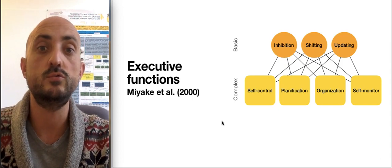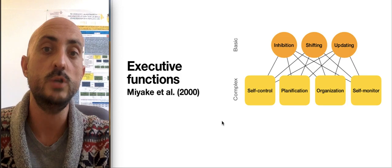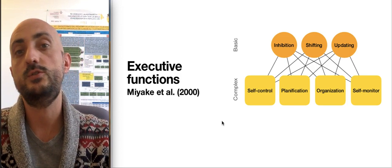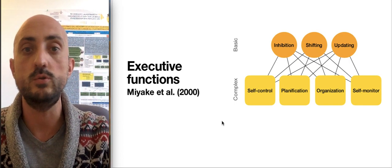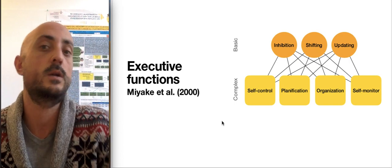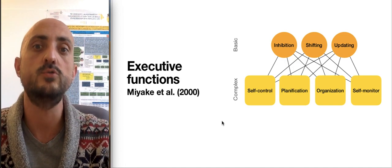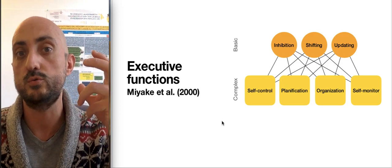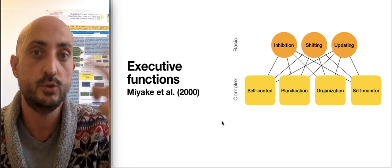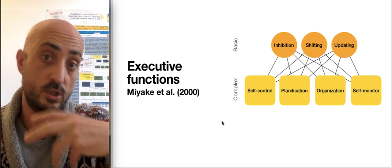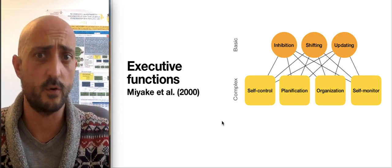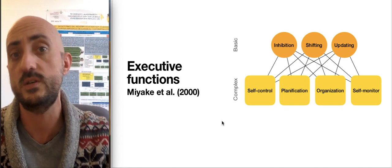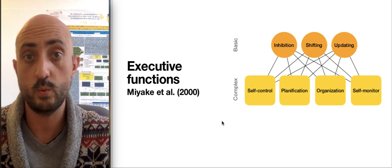I'm going to introduce what are the executive functions. These are cognitive processes that allow us to think about the objective or goal we want at any moment in our life. Executive functions also allow us to think about what behaviors we must do and in which order, to plan the steps we must perform, and to activate and control the behavior in order to achieve the goal we propose.